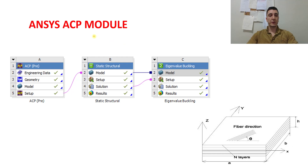Let's continue with the ANSYS ACP module. With the help of this module, we can create composite plates or composite structures and arrange the fiber directions. After we model our structure, we are going to continue with static structural to find the stress and deformations, and after that we can go through the eigenvalue buckling analysis to find the critical buckling load.